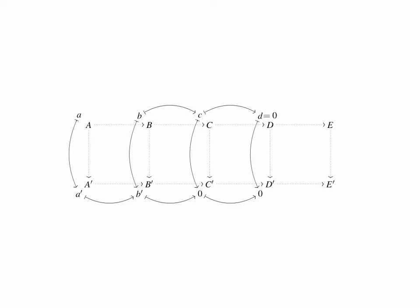Let's use commutativity of the leftmost square to track A round the other side of the square, and suppose it maps to an element A' in B, then A' also maps to B' along with B'. Since we're given that the map from B to B' is a monomorphism, the two elements A' and B' with the same image must in fact be equal, and now we can see that our original element C lies in the image of the composite map A to B to C, and since the top row is exact at B, this composite map is 0, and our element C was 0, which is what we wanted to prove.